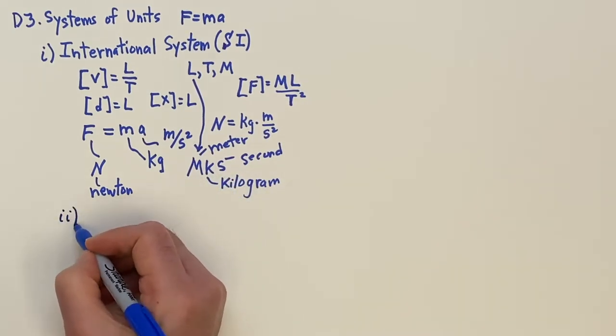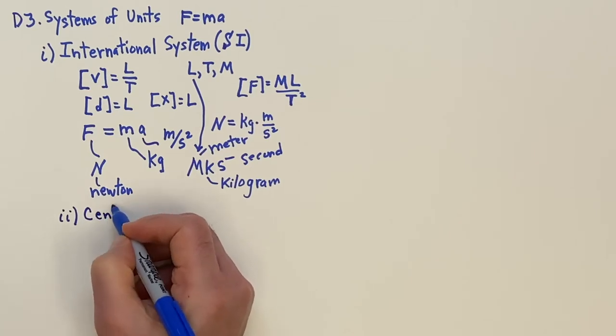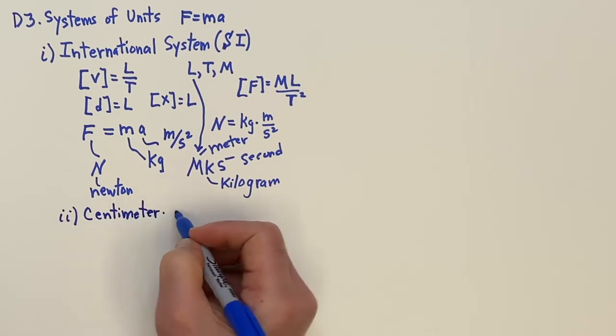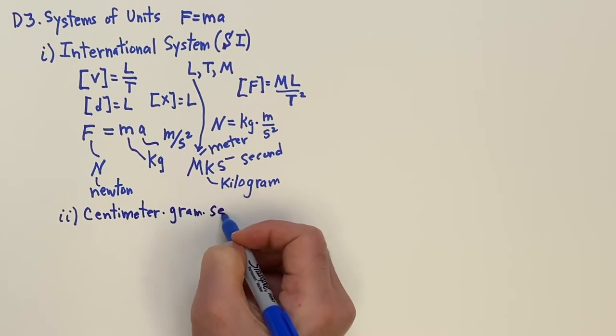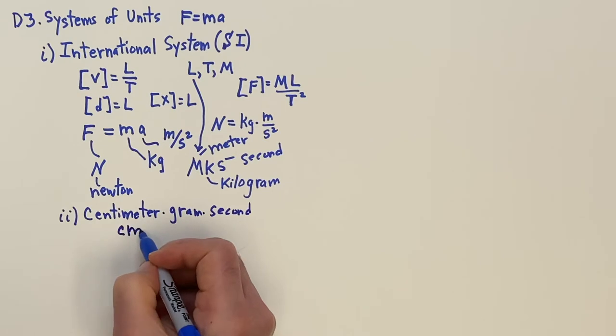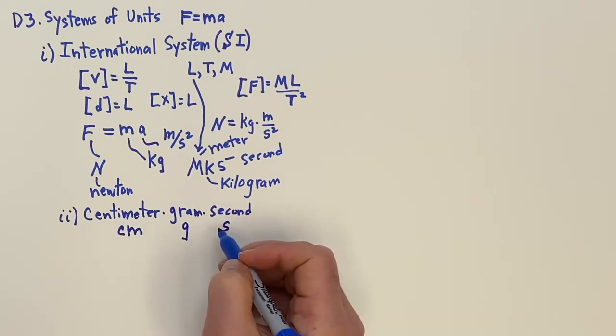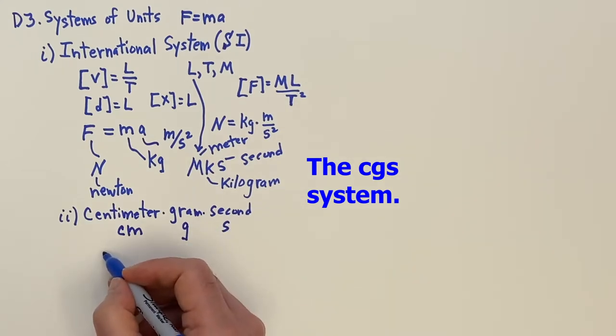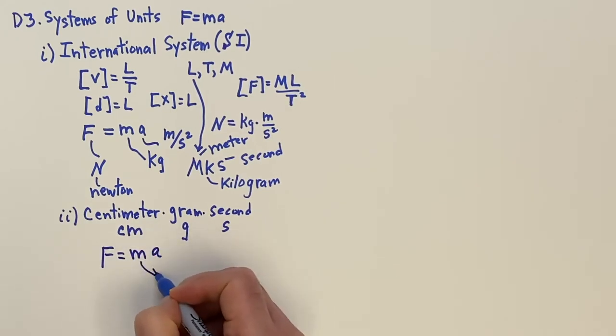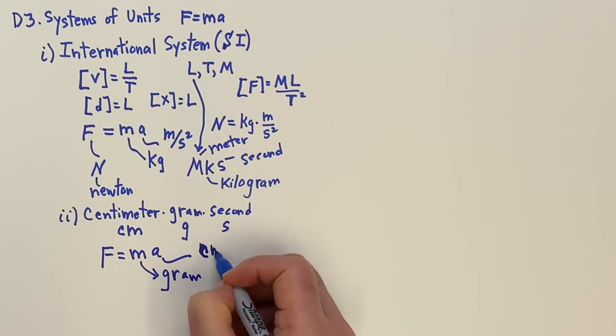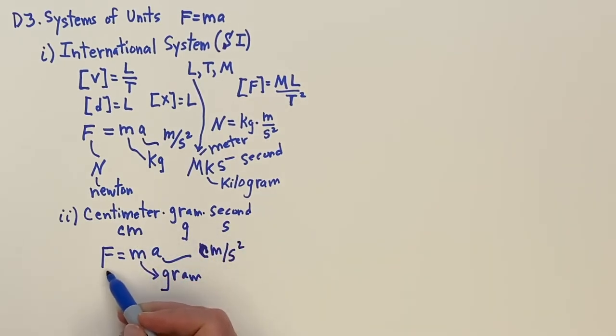Now the other system here, which is still kind of a metric system, is the one we can call the centimeter gram second. Say CGS for gram, and that's per second. Now if we do that and set up Newton's law, F equals MA, then if we use the gram for the mass, and this is going to be centimeters per second squared, because the centimeter, then by definition, when everything's one, this is a dyne.